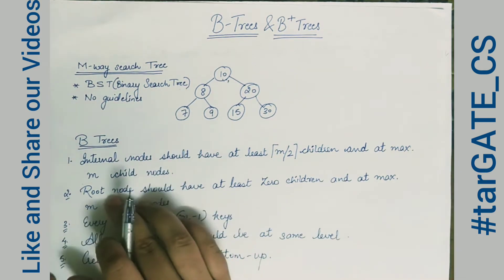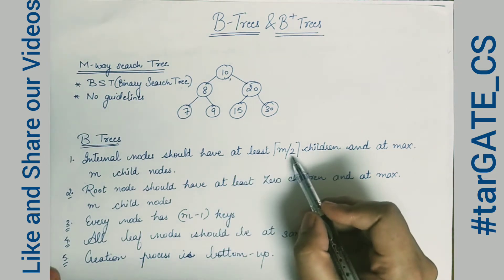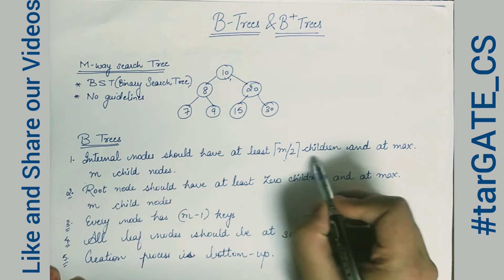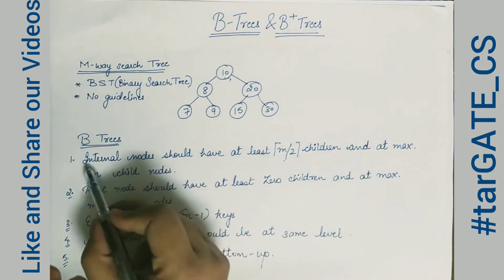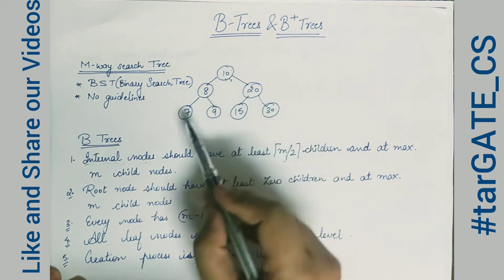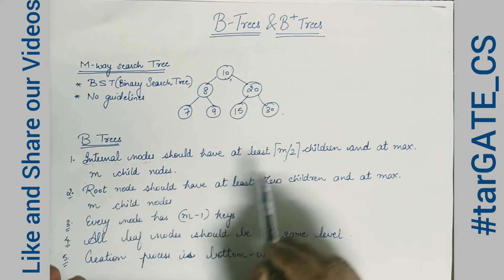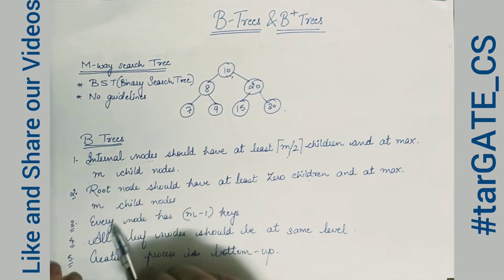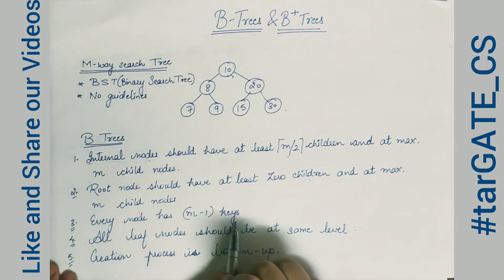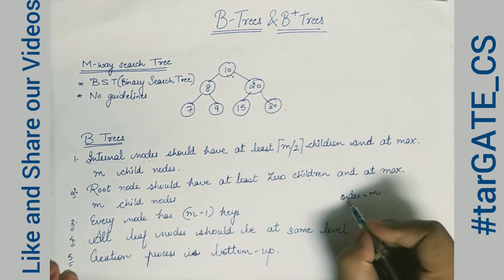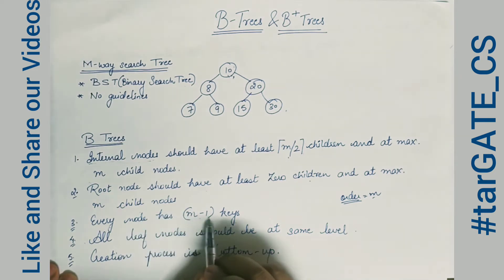The first guideline is that an internal node should have at least ceiling of M/2 children, and at max M child nodes. For example, node 820 here represents internal nodes. The root node should have at least zero children, or maximum M child nodes. Every node has at most M minus one keys — so for a tree of order M, every node can have M minus one keys at max.